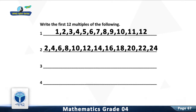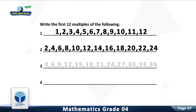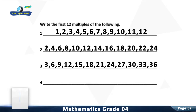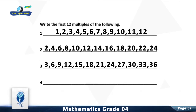Question 3: Write the first 12 multiples of 3. The first 12 multiples of 3 are 3, 6, 9, 12, 15, 18, 21, 24, 27, 30, 33, and 36.